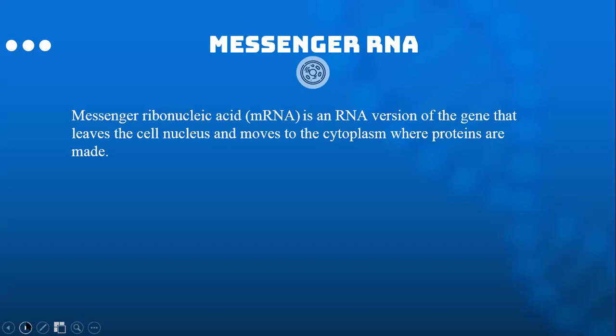The life cycle of an mRNA in a eukaryotic cell: RNA is transcribed in the nucleus. After processing, it is transported to the cytoplasm and translated by the ribosome. Finally, the mRNA is degraded. I will now hand you over to Emily.